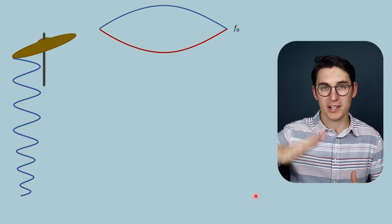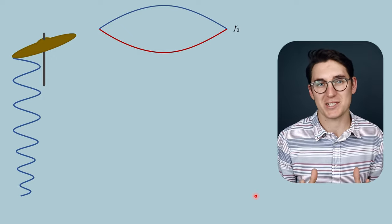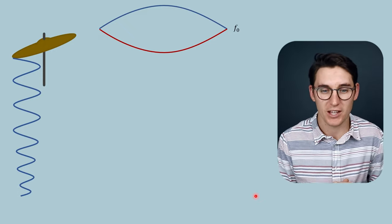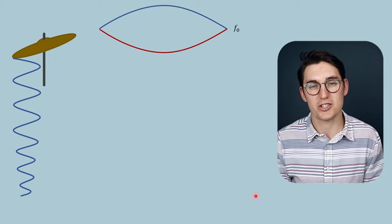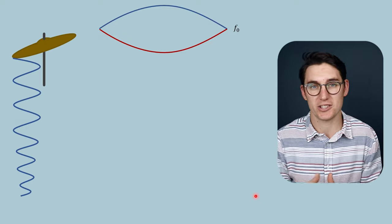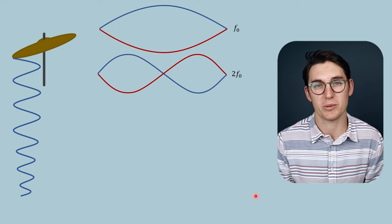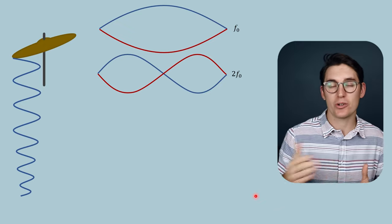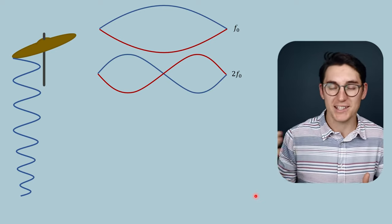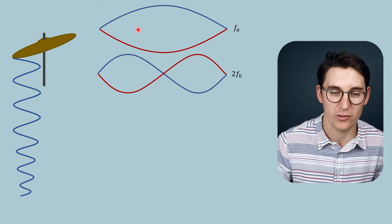If we pluck a guitar string we get a half-wavelength standing wave resonating at our fundamental frequency. A harmonic frequency is an integer multiple — a whole number multiple — of this resonance frequency. So if the string is resonating at 2 MHz, the first integer multiple is 4 MHz (times by 2), then 6 MHz (times by 3), then 8 MHz (times by 4). The fundamental frequency can thus be related to these higher harmonic frequencies. When a wave interacts with tissues the returning echo is normally at the fundamental frequency, but there are reasons we also get echoes returning at these harmonic frequencies.